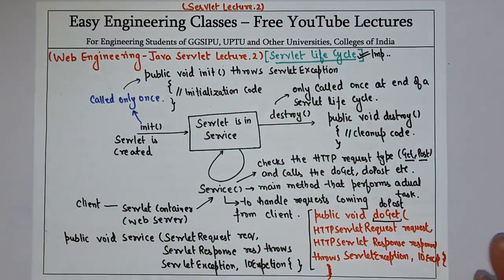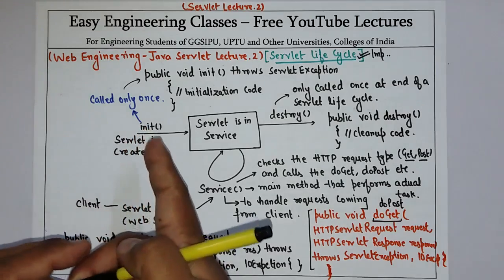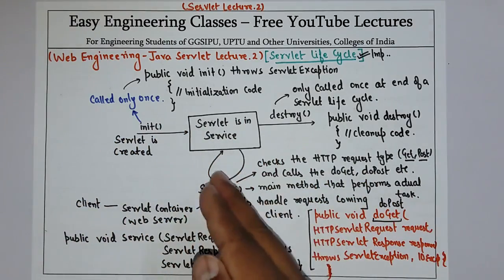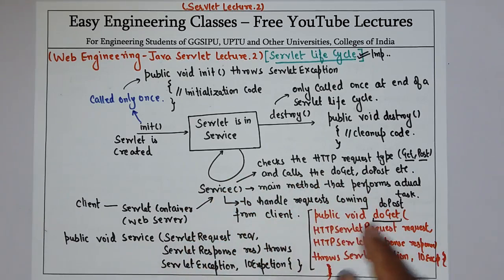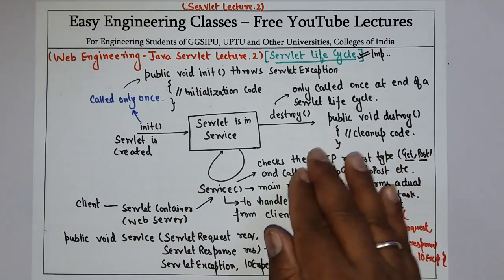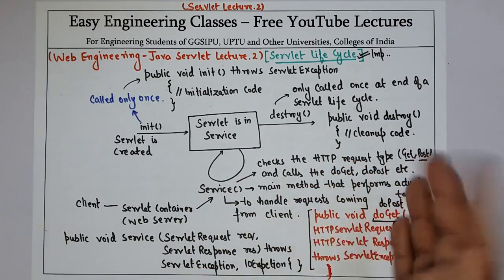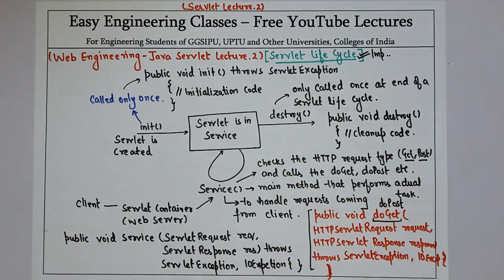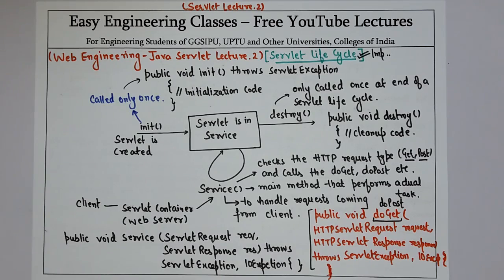So that is the complete lifecycle of Java servlets. We started with init where the servlet is initialized, then the servlet is in service where the service method calls the appropriate doGet or doPost method depending on the HTTP request type, and once the work is done the destroy method is called for cleanup. In the next video we are going to see the servlet architecture in detail — how a servlet creates multiple threads for a request. Thank you for watching. Please subscribe to my YouTube channel for more such tutorials.